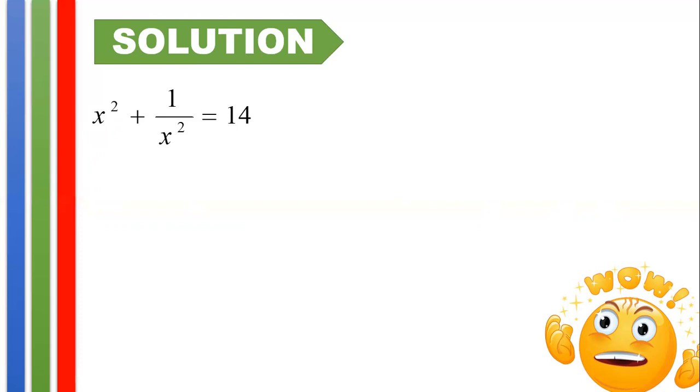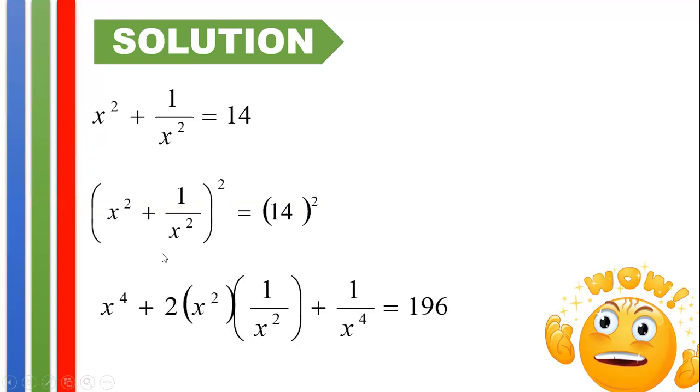And from here, our goal is to reach x to the fourth plus 1 over x to the fourth. Hence, we need to square again both sides of this equation. And squaring both sides, we have this statement. So squaring again, we have to square the first term, that's x to the fourth, plus here, so it's plus here, twice the product of the first and of the second term. So we have twice the product of x squared and 1 over x squared, plus the square of the last term, which is 1 over x to the fourth, equals 14 squared, or 196.